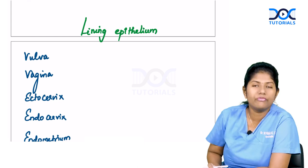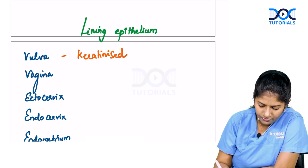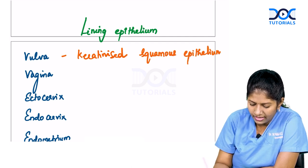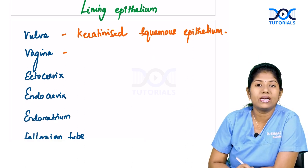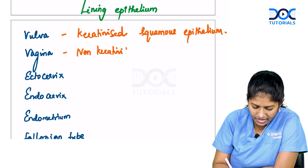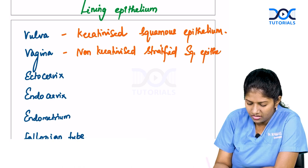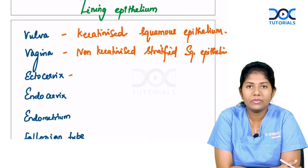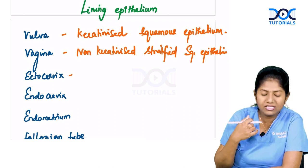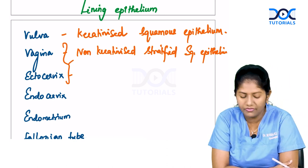The lining epithelium of vulva is keratinized squamous epithelium, like any other part of the skin. The lining epithelium of the vagina is non-keratinized stratified squamous epithelium. The ectocervix is continuous with the vagina and is also lined by non-keratinized stratified squamous epithelium. So both the vagina and the ectocervix are lined by non-keratinized stratified squamous epithelium.